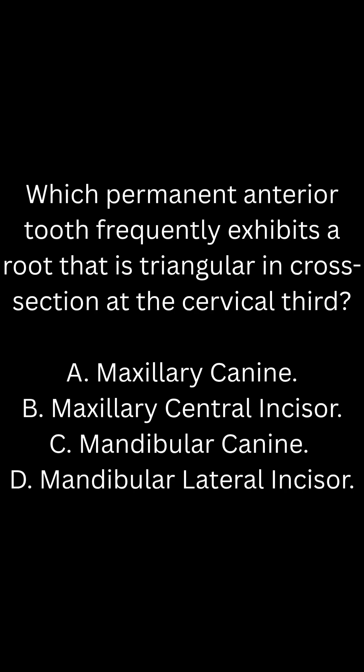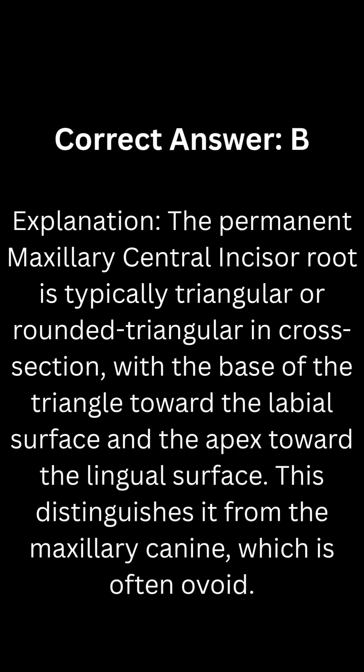Correct. Answer: B. Explanation: The permanent maxillary central incisor root is typically triangular or rounded triangular in cross-section, with the base of the triangle toward the labial surface and the apex toward the lingual surface. This distinguishes it from the maxillary canine, which is often ovoid.